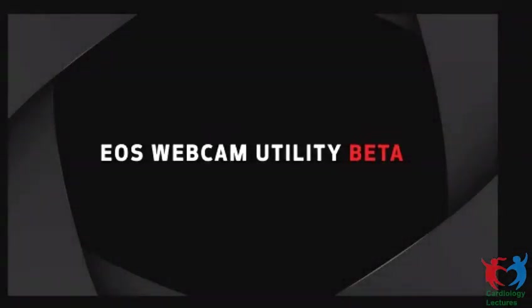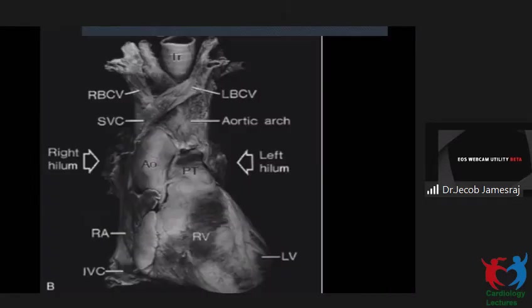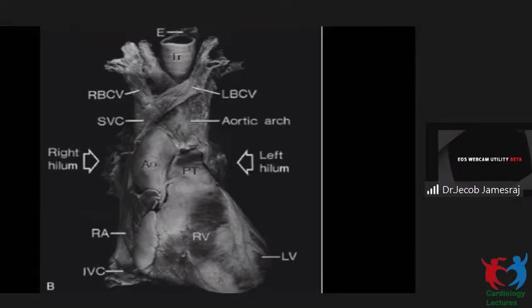We will now move on to the PowerPoint. So this is just a bit of a recapitulation of the structures. Here you see the innominate veins quite clearly, joining together to form the SVC and the anterior part of the heart. Most of it is the right ventricle, the left ventricle a little bit beyond the LAD, the IVC and SVC entering into the right atrium.